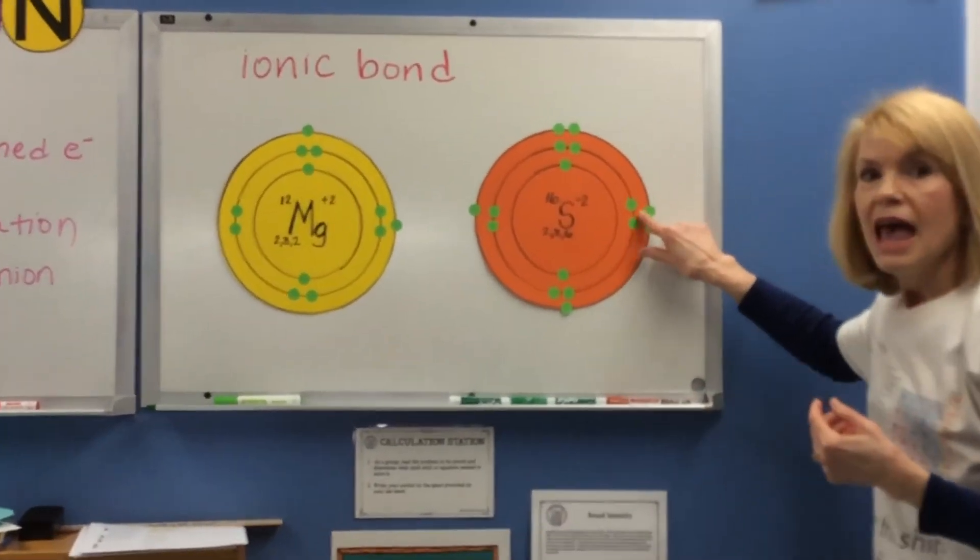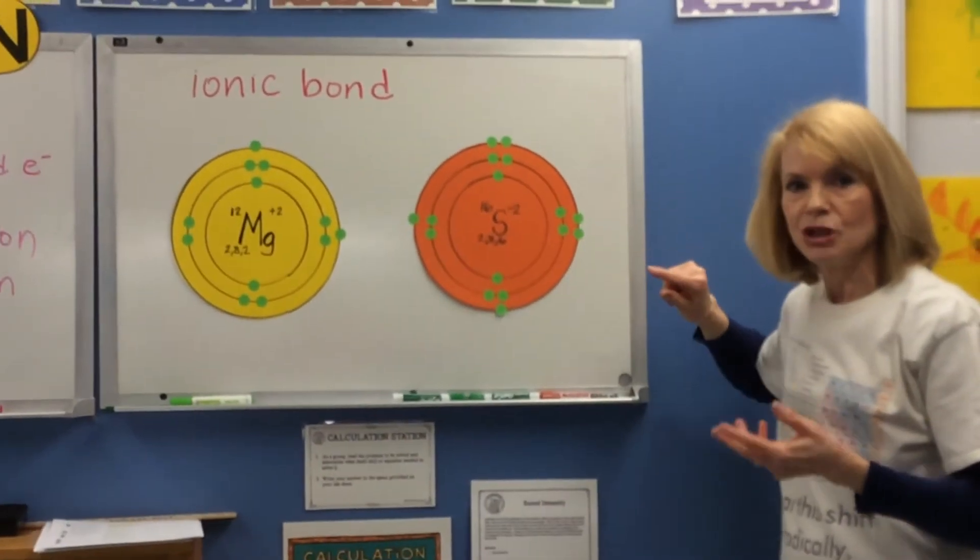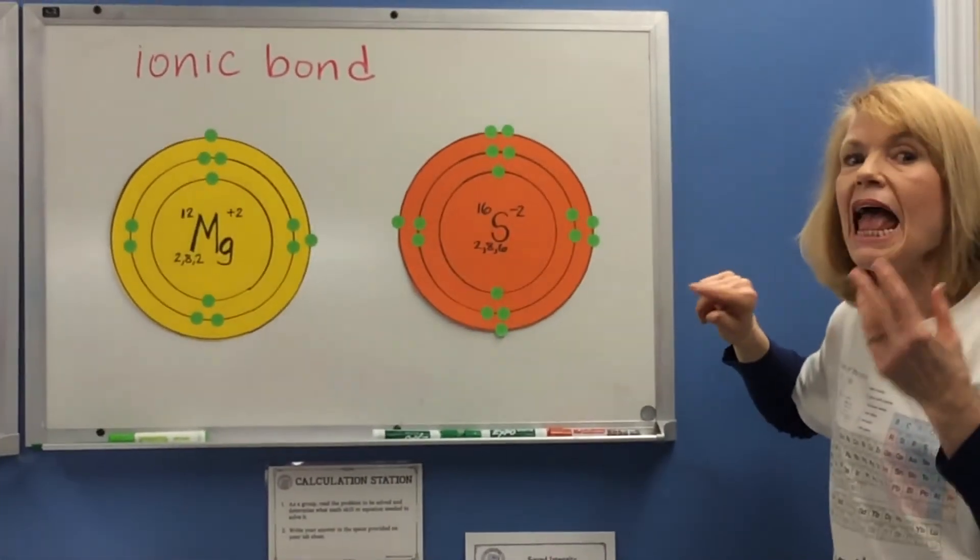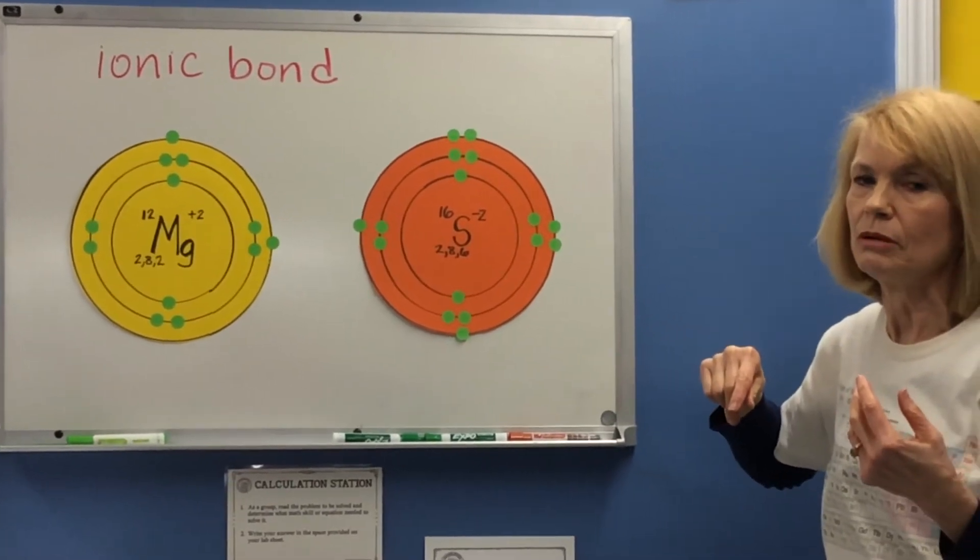Sulfur has 6 electrons in its outer shell. To get 8, sulfur wants 2 more electrons to be stable or to be happy.